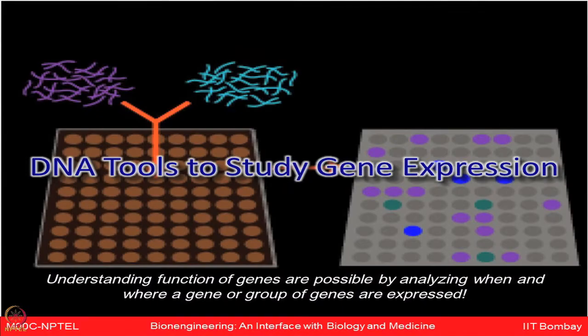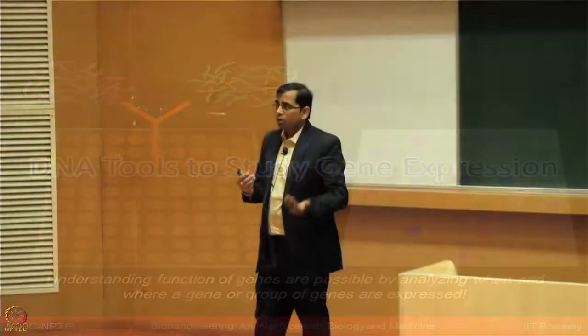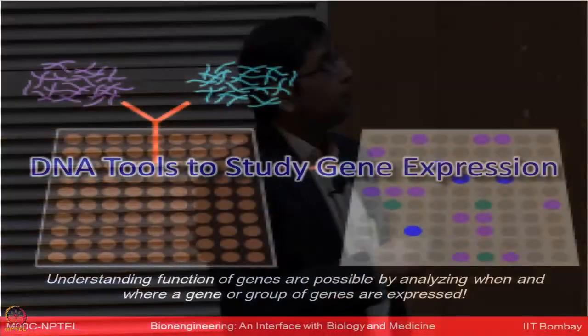If you want to study which gene is expressed at which time, for example comparing a normal individual to someone suffering from a given cancer type — which proteins or genes are expressed in that cancer individual? You want to know which mRNAs are being expressed, how they differ from the normal individual, and which proteins are being made. This is known as expression analysis: looking at how an mRNA or protein is going either up-regulated or down-regulated from the normal basal level.